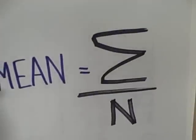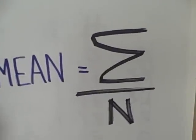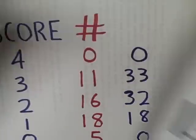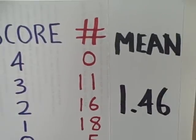Then we plug it into the formula. 73, which is our sum of the scores, divided by the number of scores, 50. And we determine our mean for this particular set of data, 1.46.